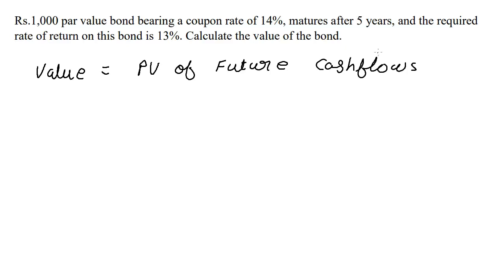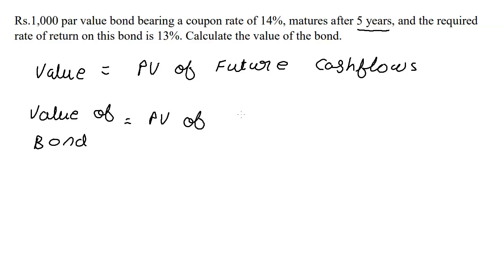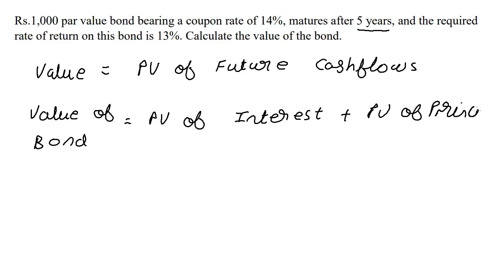The value of the bond is going to be equal to the present value of its future cash flows. It's maturing after five years, which means we're going to receive interest for five years. So it's going to be the present value of interest plus the present value of principal.